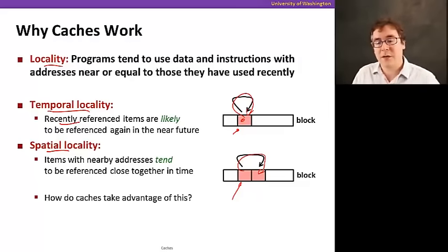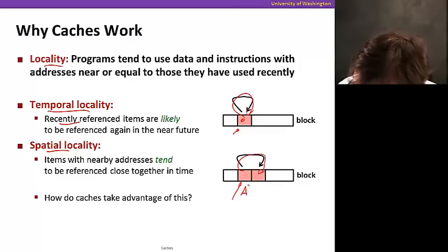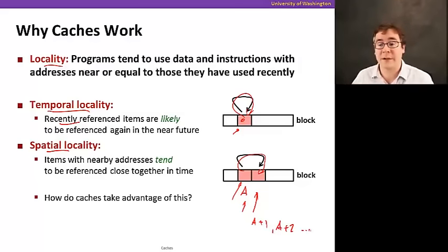So essentially, if you need, say, address a, when you go to the cache, you're not only going to get a, but you're also going to get a plus 1, a plus 2, and so on, up to a certain limit.